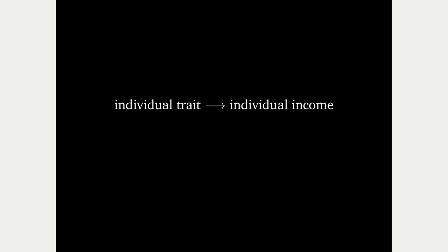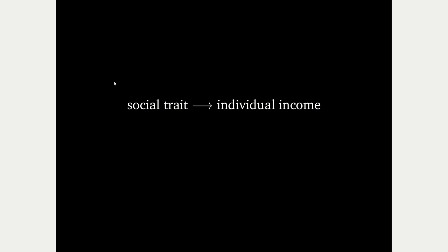I think we need to discard not just human capital theory itself, but the methodology that led to it — often called methodological individualism. It's common in many social sciences, particularly economics. When it comes to income, methodological individualism is the idea that individual income must be explained in terms of traits characteristic of the individual. If a CEO earns a hundred times more than a janitor, we need to explain this difference in terms of some trait of the CEO relative to the janitor.